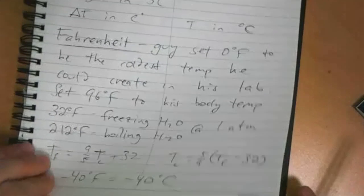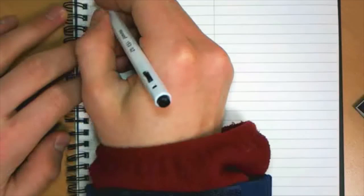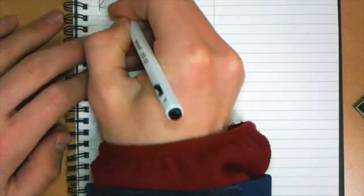The third scale is also important because it's one that's used often in science, and that is the Kelvin scale. Kelvin, for whatever reason, is not degrees. It's degrees Celsius, degrees Fahrenheit, but Kelvin is just Kelvin, and the temperature is 35 Kelvins or whatever.